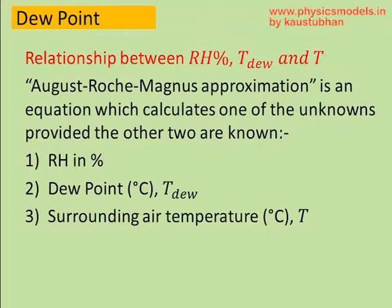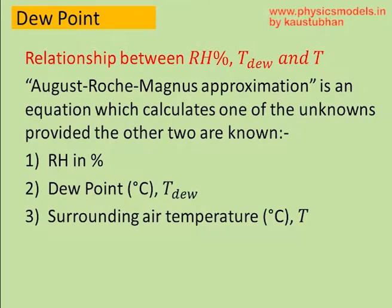Since relative humidity, dew point temperature, and existing temperature are all related to each other, there is an equation called the August-Rosch-Magnus approximation which helps calculate any one of them if the other two are known. I hope this video was useful to you. Thanks and have a great day.